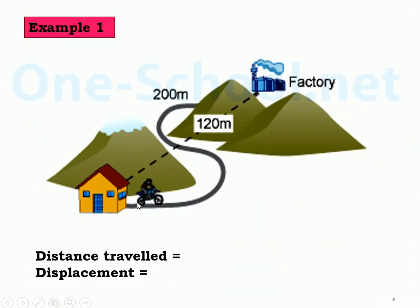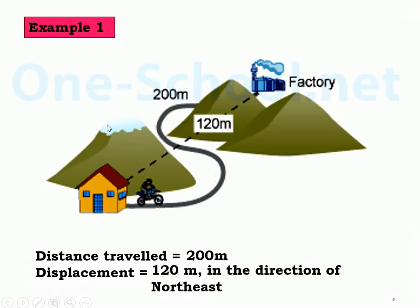Here's an example: a worker riding on a motorcycle trying to go to the factory. The road is a curvy route around the mountain. The distance traveled by the motorcyclist is 200 meters. But the displacement - the straight line from the initial position to the final position - would actually be 120 meters in the direction of northeast. So displacement is a vector quantity; we need to state both the magnitude and the direction.